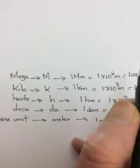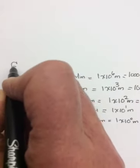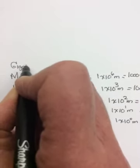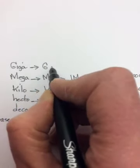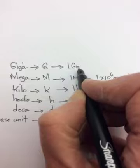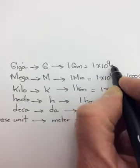Times 10 to the 7th doesn't exist anymore. Times 10 to the 8th doesn't exist anymore. But times 10 to the 9th does. It's the next one. And again, you would have heard of it. It's giga. Capital G. And 1 gigameter is equal to 1 times 10 to the 9th meters.